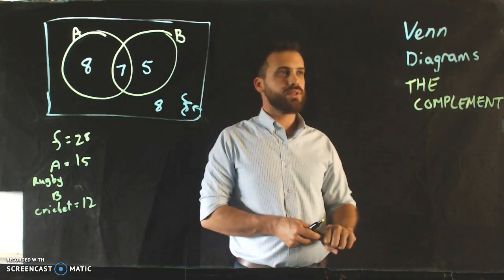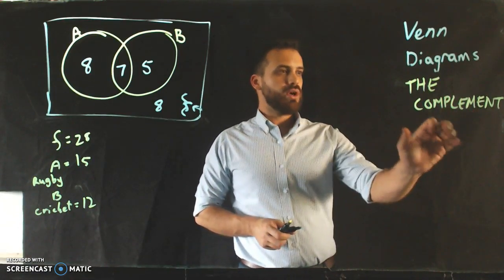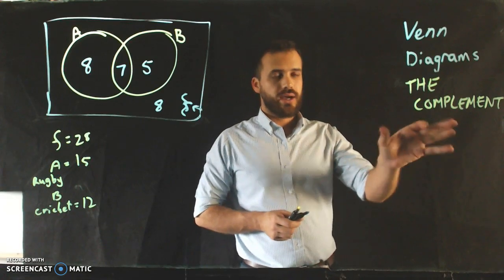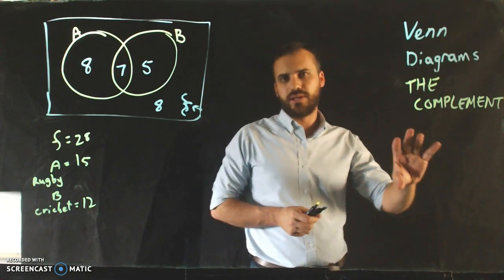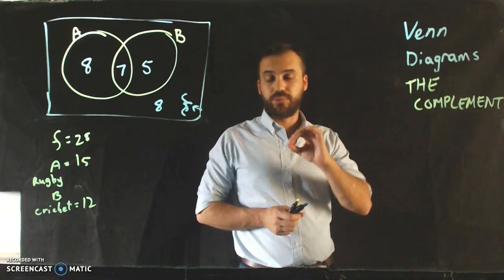Venn diagrams again, but this time we're looking at something called the complement. This is a very important idea in probability.